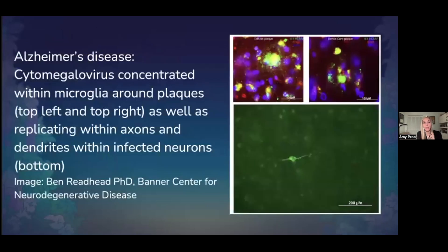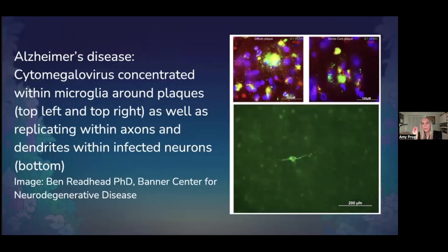This is another image from Ben Readhead's team, a really great group studying the intersection of chronic infection and Alzheimer's disease at Arizona State University. It's actually unpublished data, but he shared this image. They'll publish soon, showing cytomegalovirus — another herpes virus — concentrated inside the plaques of brain tissue collected from people with Alzheimer's disease.